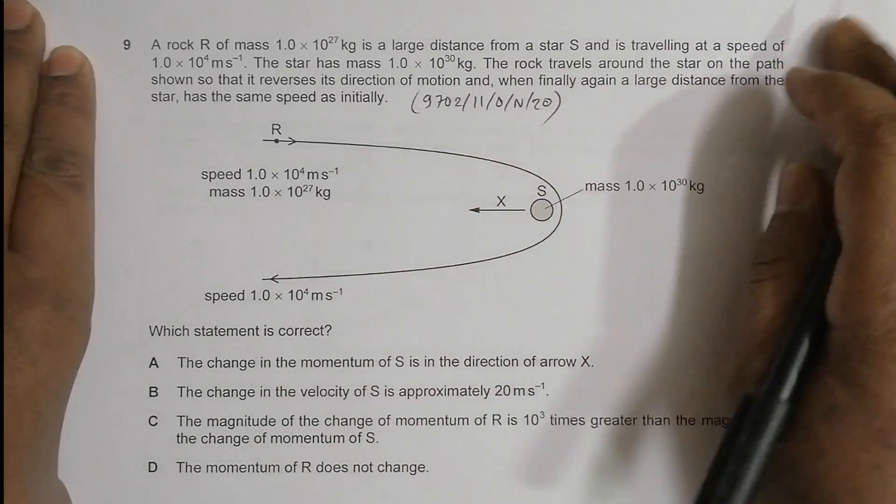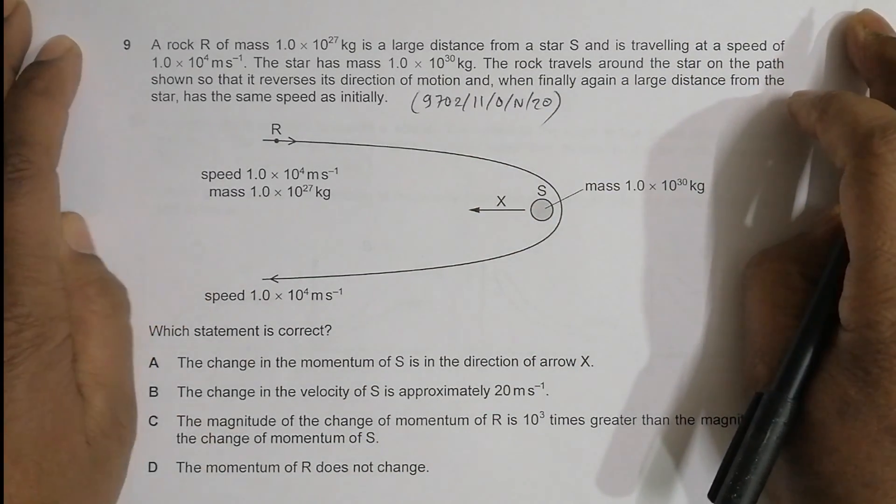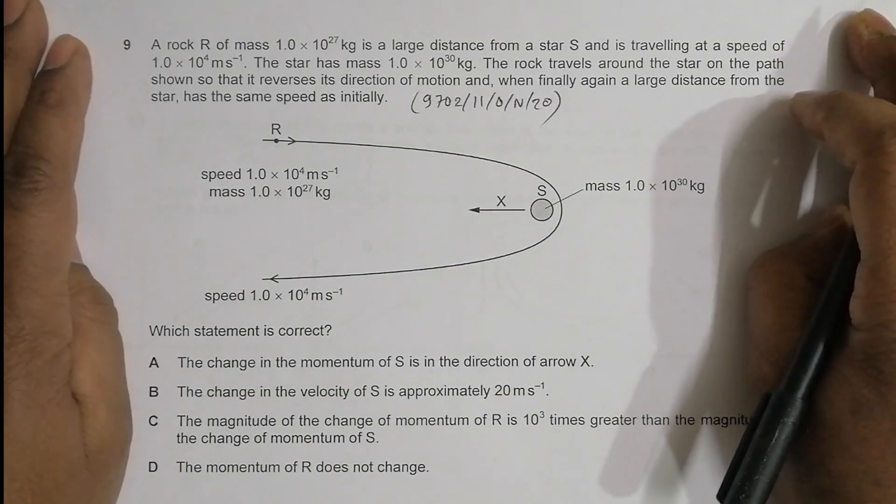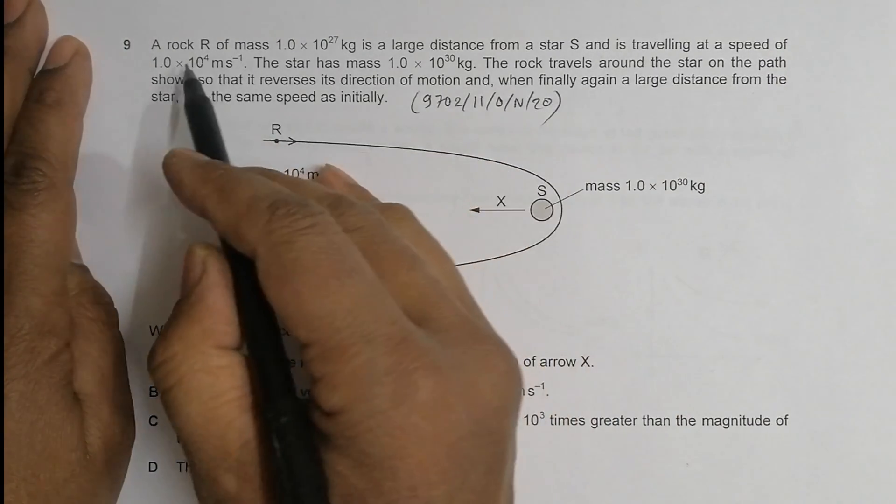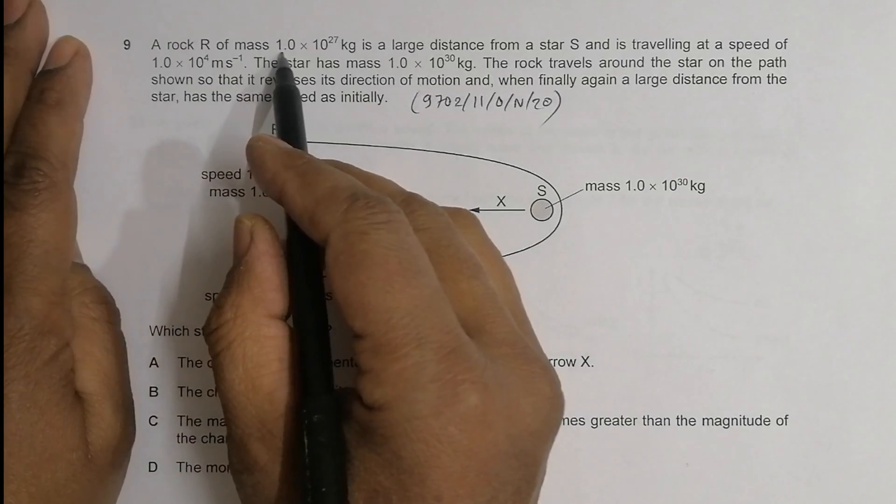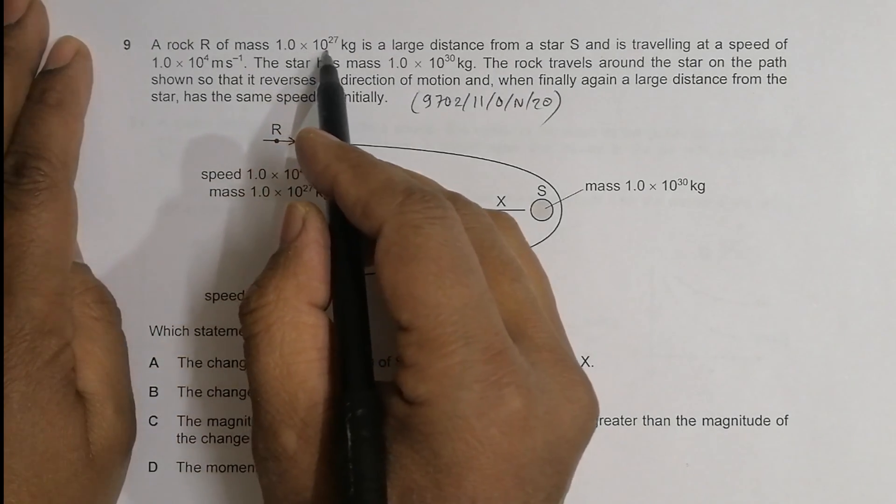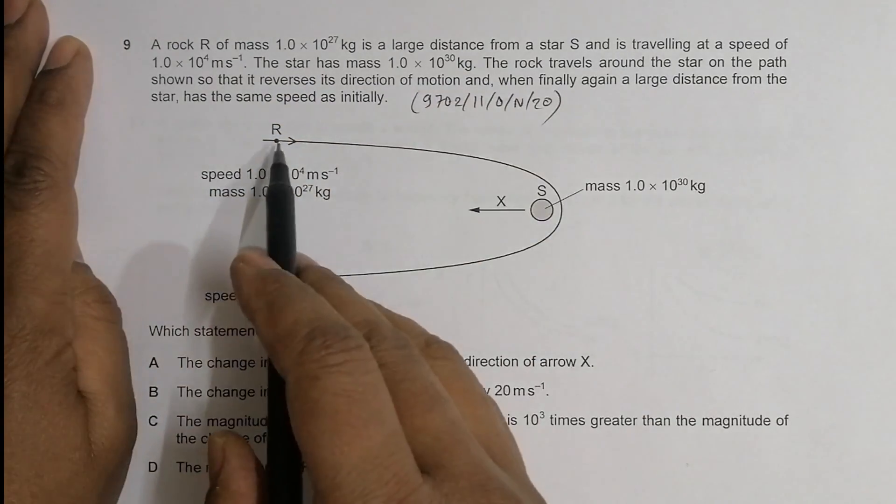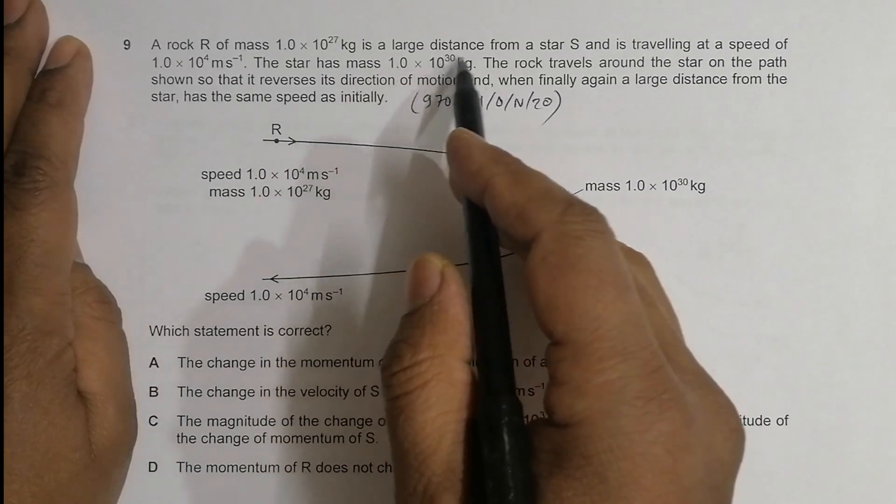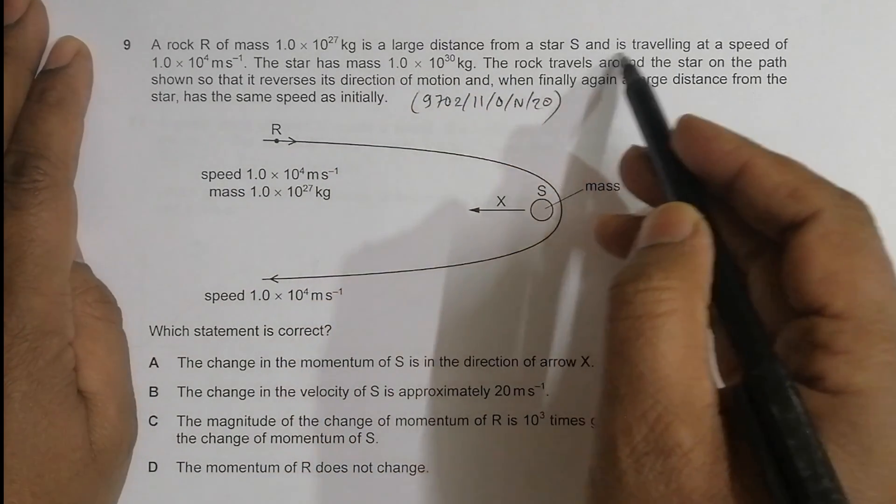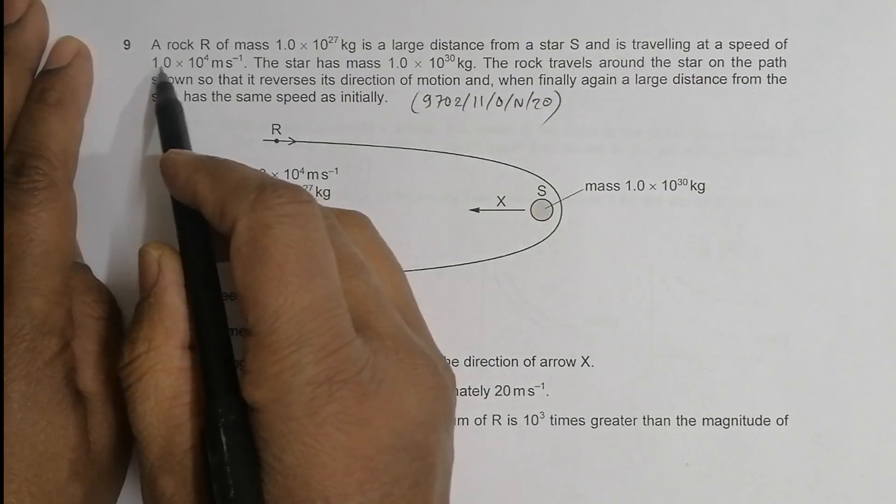Hello folks, this is 2020 October-November Paper 1 Question 9. This question is concerned with the chapter on dynamics. It states that a rock R of mass 1.0×10²⁷ kg is a large distance from star S and is traveling at a speed of 1.0×10⁴ meters per second.